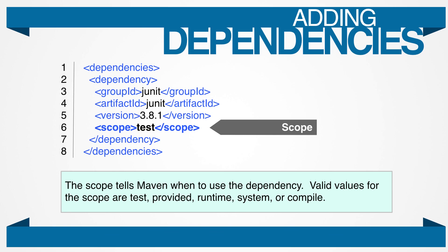Test means it's only available for compiling and running tests. System is the same as provided, but the dependency isn't found in the repository — Maven only verifies the file exists. If you use system as your scope, you also need to provide an absolute system path to the dependency. You can also tell Maven to exclude dependencies — you would use this when you don't want to use a dependency of a dependency, such as when one conflicts with something you're using, usually something regarding logging. The simple solution is to just exclude it.